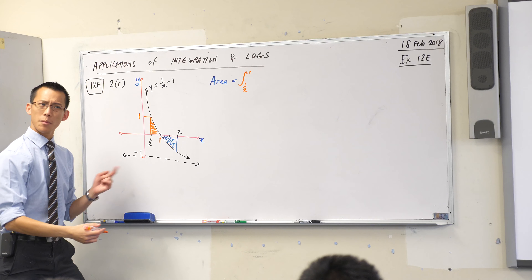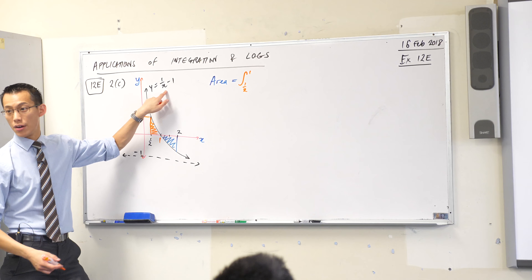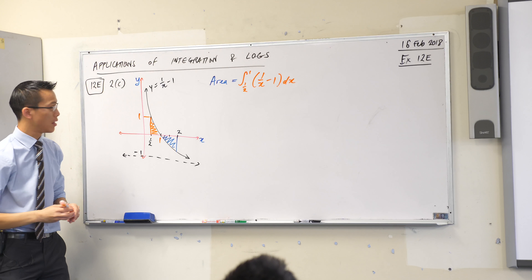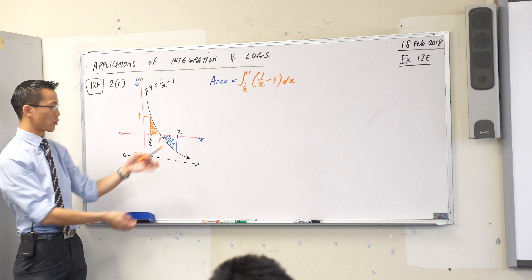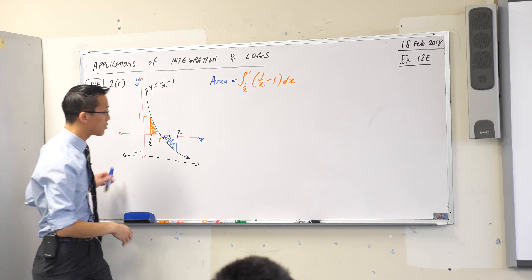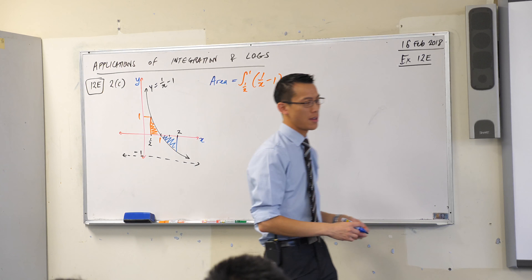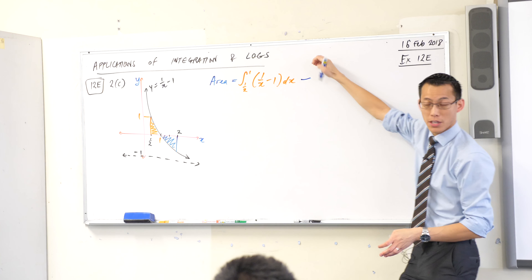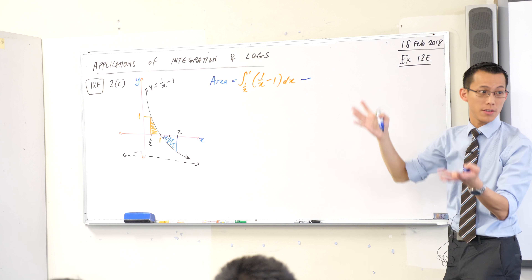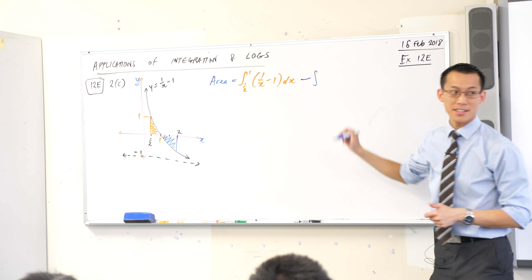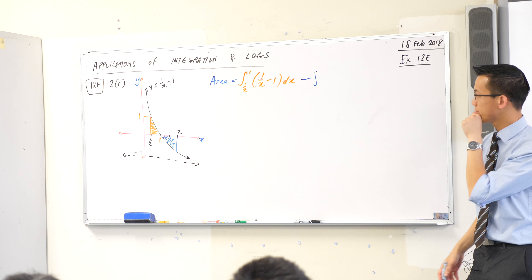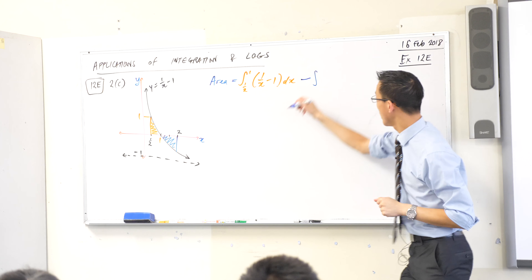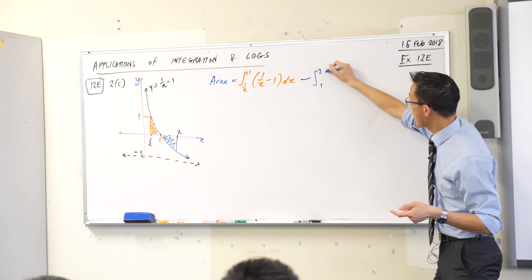Now we've done our thinking, we can have a go at this. The area will equal one integral at a time — I'm even going to use the same colors. The orange one: its signed area is positive so we can just go from one boundary to the next without any fancy stuff. I'm going to go from one half to one. What am I integrating? There's the function over there. That integral in orange corresponds to that area in orange.